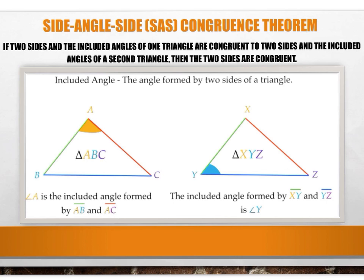Let's start by getting familiar with the side-angle-side congruence theorem. It states that if two sides and the included angles of one triangle are congruent to two sides and the included angles of a second triangle, then the two triangles are congruent. An included angle is the angle formed by two sides of a triangle.